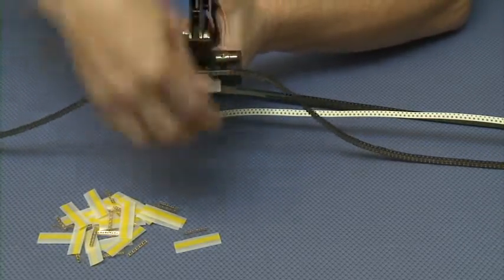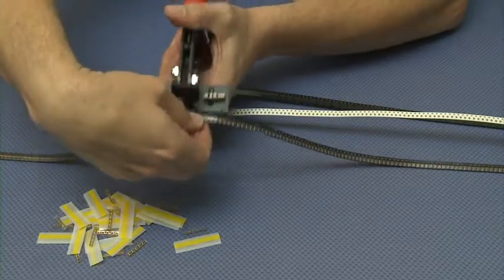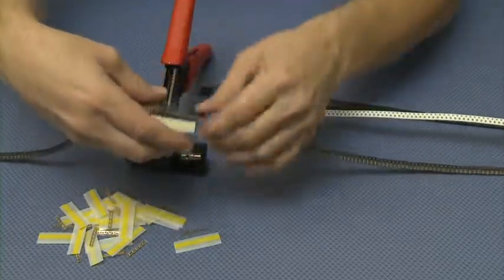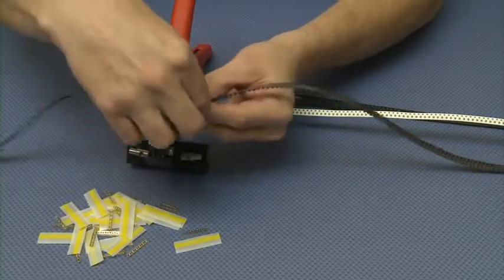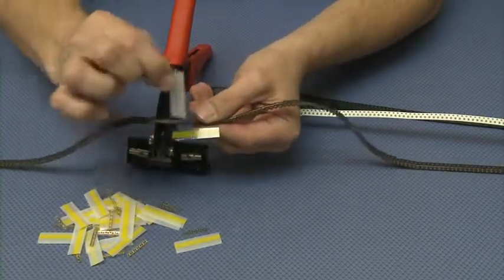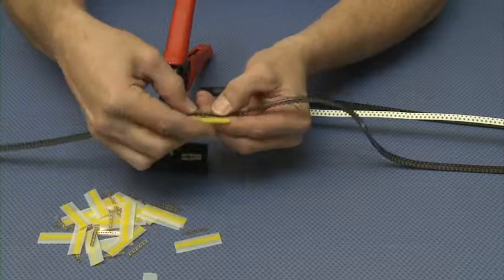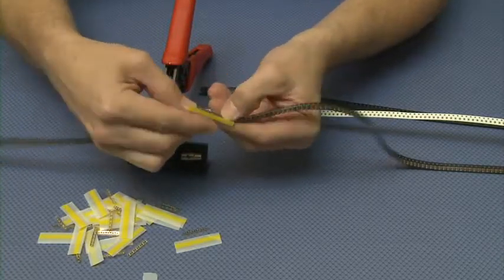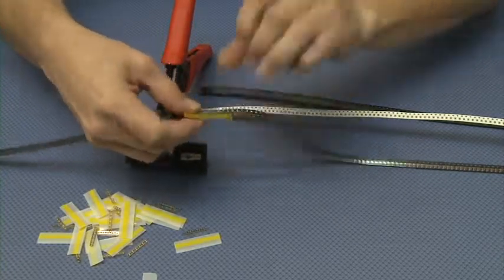We then will remove the splice from the tool itself and then remove the white liner, and then we will fold over the splice to the top of the carrier tape itself.